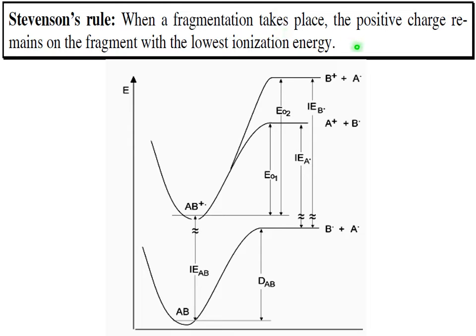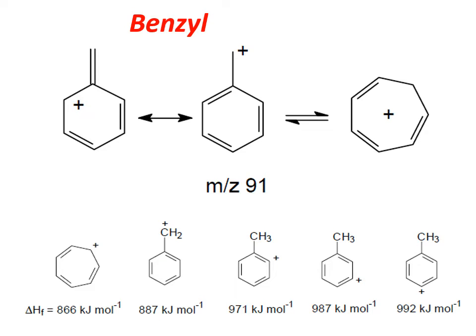If you have a positive ion with no radical, you should have a positive ion with no radical at the end. Then we have Stevenson's rule: fragmentation takes place and the positive charge remains on the fragment with the lowest ionization energy.